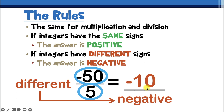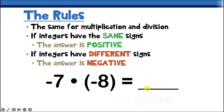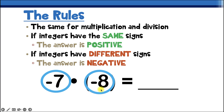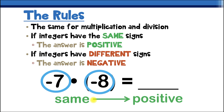In this example we've got negative 7 times negative 8. Our first sign is negative and our second sign is also negative, so the signs are the same. That means our answer will be positive. 7 times 8 is 56, so our answer is positive 56.